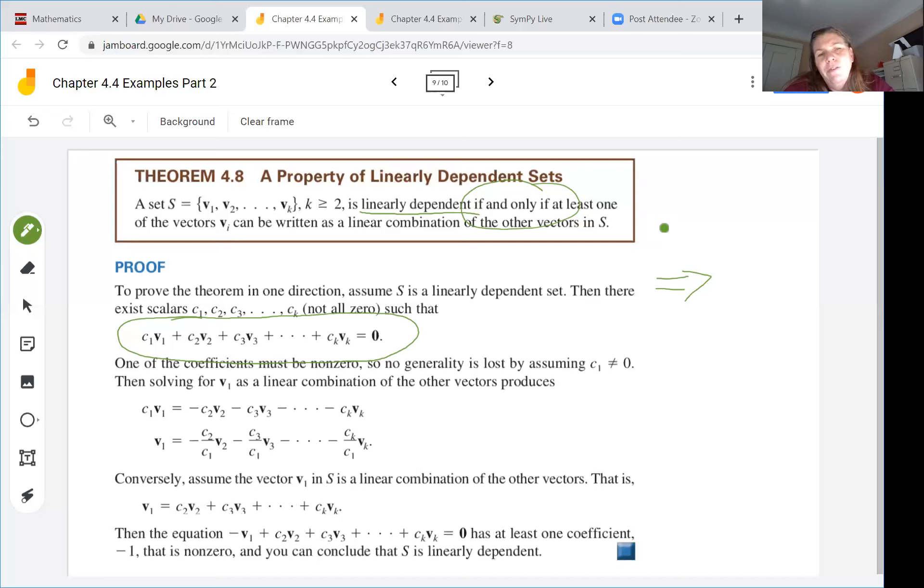Then one of the coefficients must be non-zero. No generality is lost by assuming that that's the first coefficient. So we'll assume C1 is not zero and of course it could arbitrarily be any of the value C's that are not zero.